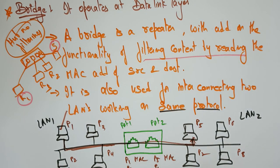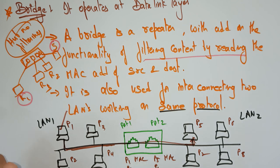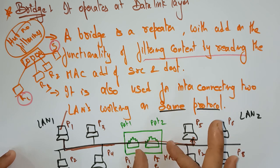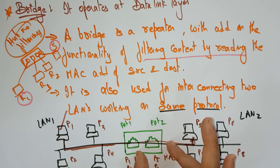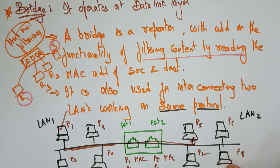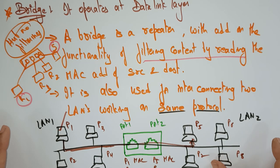So that is the concept of the bridge. A bridge is a repeater with added functionality. The repeater is a two-port device. The hub is a multi-port device. But in both repeater and hub, there is no content filtering. In the bridge, even though it is a two-port device, it has filtering capability — by reading the MAC addresses of source and destination. It is also used for interconnecting two local area networks working on the same protocol.